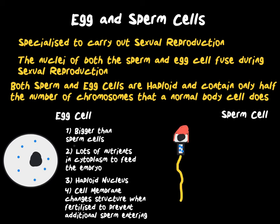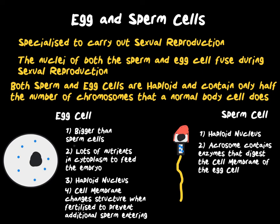Sperm cells, on the other hand, are much, much smaller. Sperm cells have a haploid nucleus and also have an acrosome at the head of the cell. This contains enzymes that allow it to digest its way through the membrane of the egg cell. Just behind the head, in the middle section, we have a large amount of mitochondria. This provides the cell with lots of energy in order to allow it to swim towards the egg. Finally, the sperm cell has a long tail, which allows it to swim towards the egg.